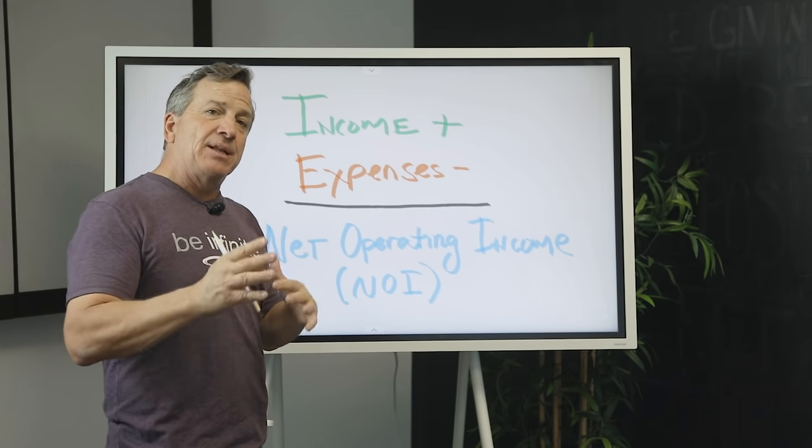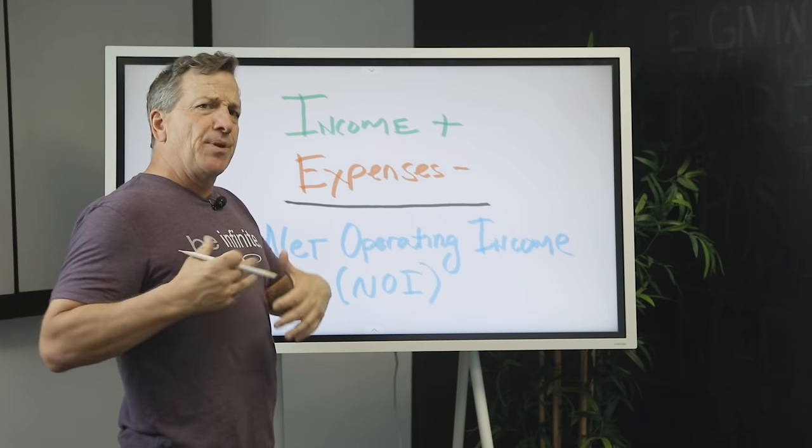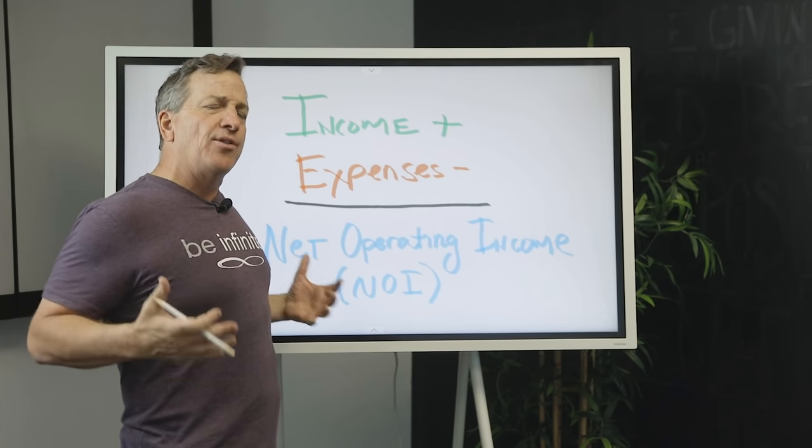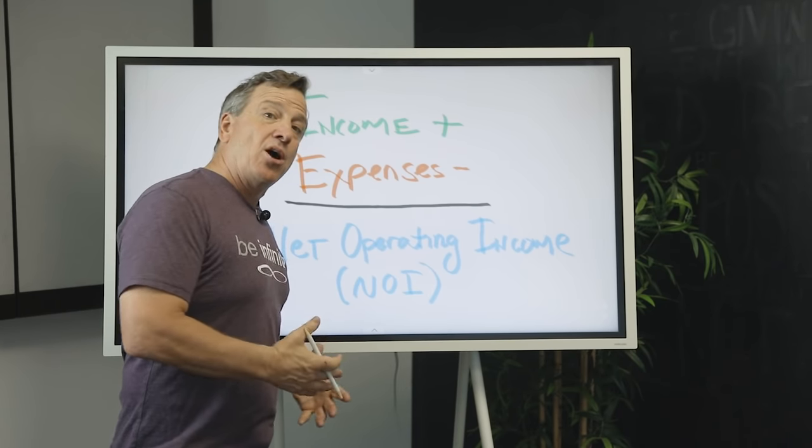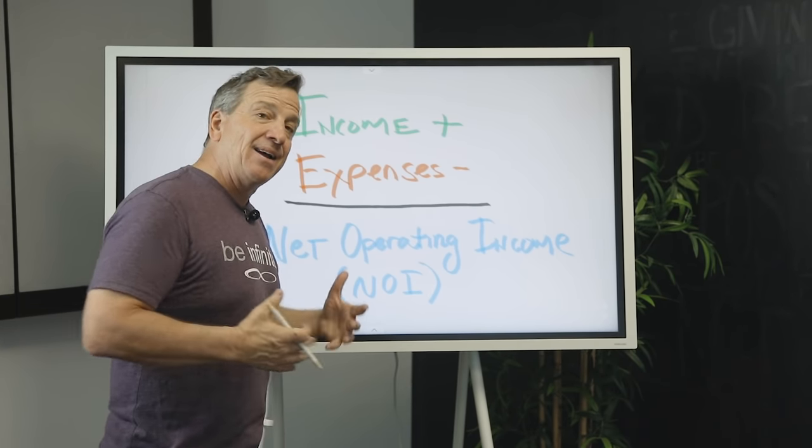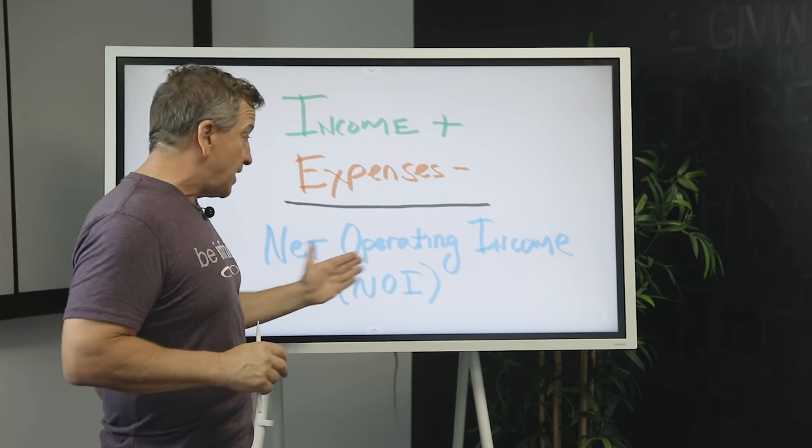The thing that can manipulate the income would be vacancy rate. Depending on where we are in the market cycle, income could be high, it could be really strong, occupancy could be really high. So all those things are going on, and income is a big piece of your net operating income.